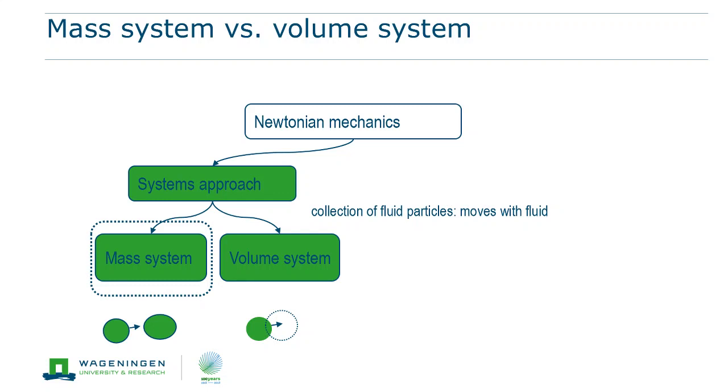For this mass system, the physical laws are still directly valid. But it is hard to identify because we cannot simply color the particles blue or red. So we cannot see those mass particles.